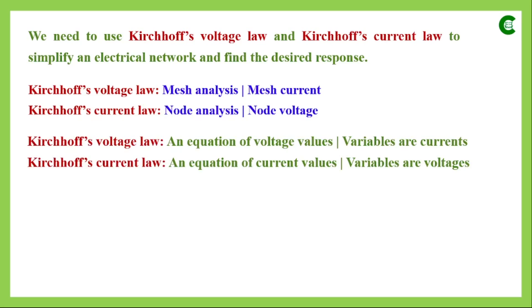When we apply Kirchhoff's voltage law or KVL, basically we form an equation which has only voltage values. These voltage values could be the values of the voltage sources or the voltage drop across passive elements. If it is a DC voltage source, it will have a constant value; if AC, we take the RMS value. If it is a voltage drop across a passive element, then as per Ohm's law, the voltage drop is the current through that element multiplied by the resistance or impedance value.